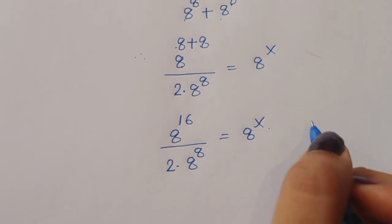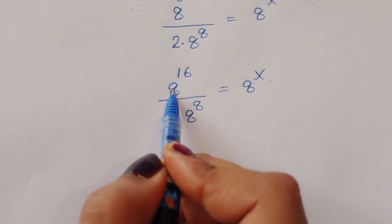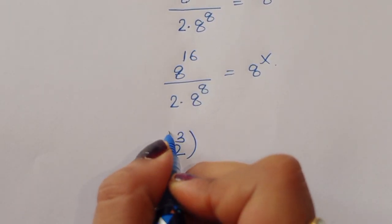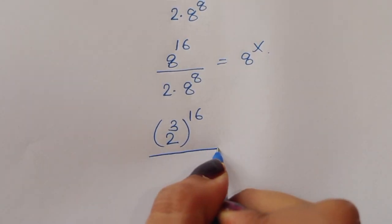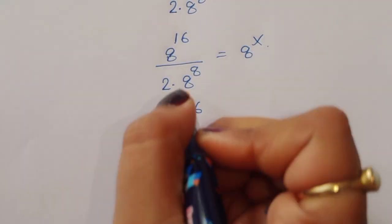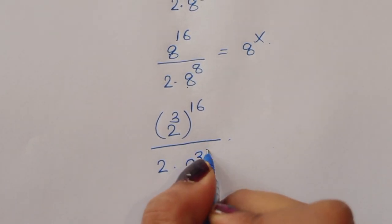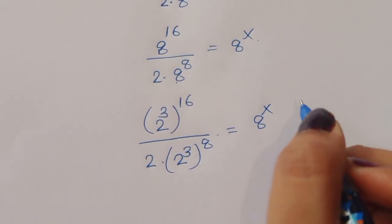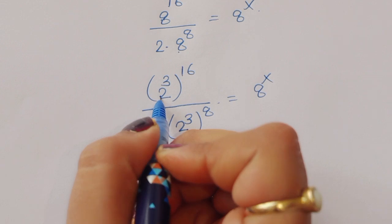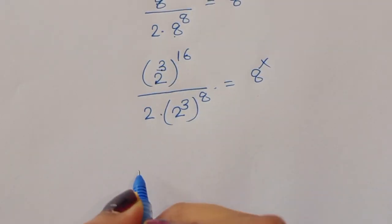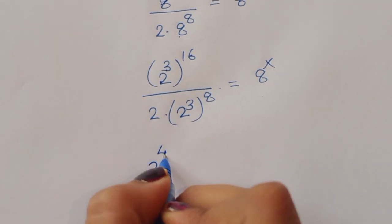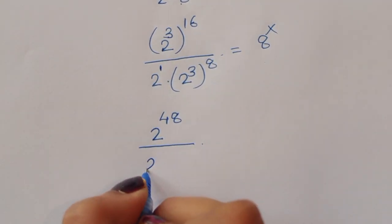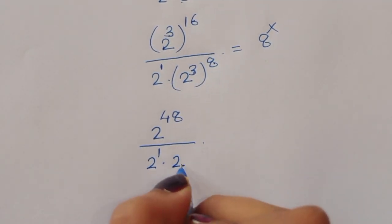Now 8 power 16 — since 8 equals 2 power 3, we can write this as 2 power 3 to the power 16, which gives 2 power 48. In the denominator, 2 times 8 power 8: we write 8 as 2 power 3, so 8 power 8 is 2 power 24. And 2 times 2 power 24 gives 2 power 1 times 2 power 24.